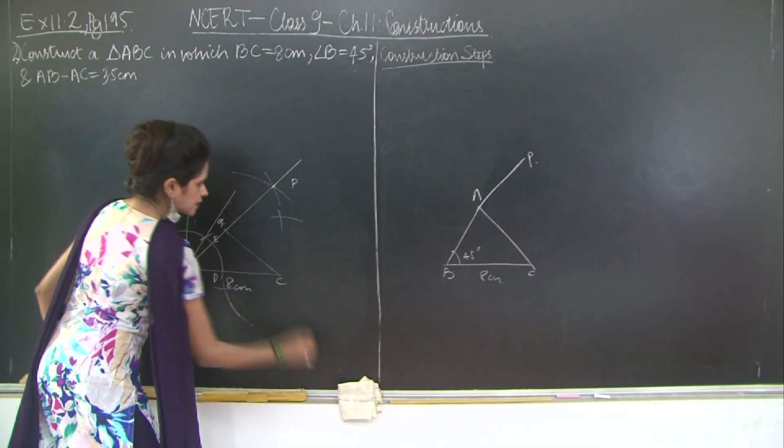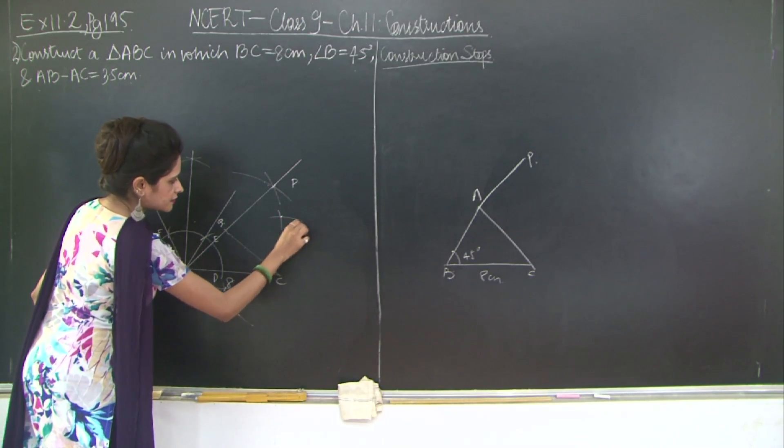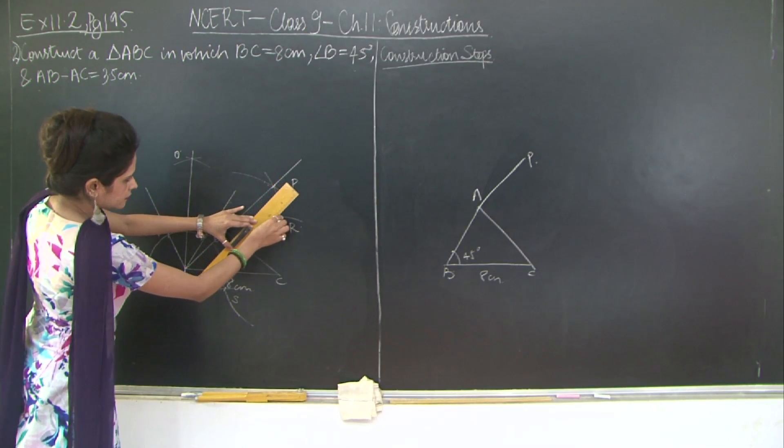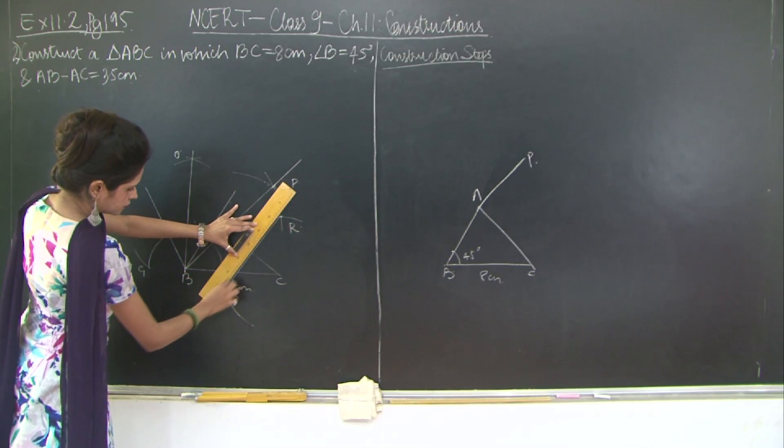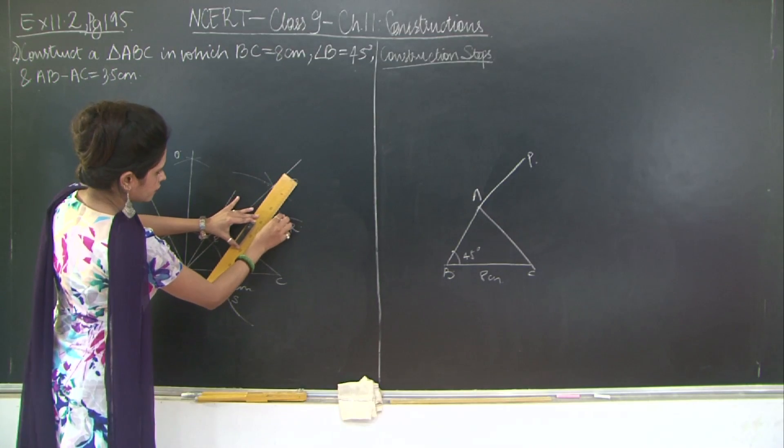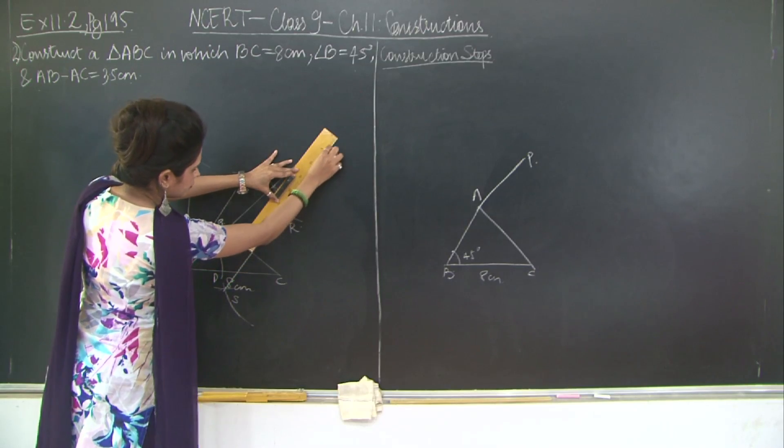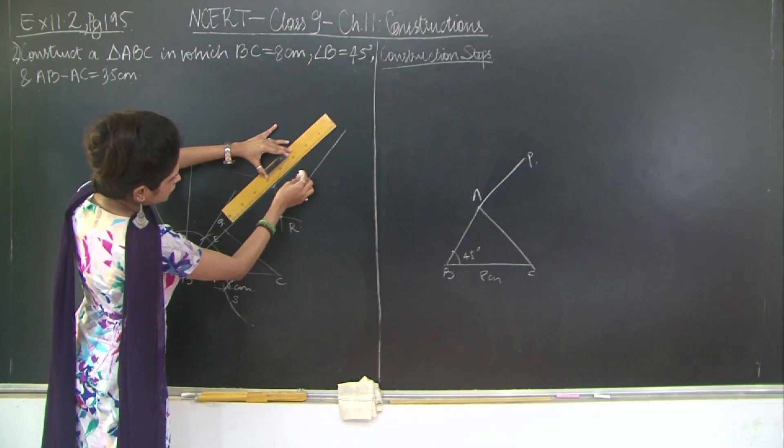Let this point of intersection of the arcs be R and S. So you join R and S and you keep extending this line, and also you extend this line out here.